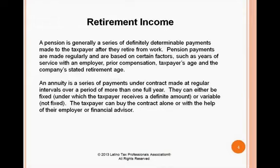An annuity is a series of payments under contract made at regular intervals over a period of more than one full year. They can either be fixed — under which the taxpayer receives a definite amount — or variable, not fixed. The taxpayer can buy the contract alone or with the help of their employer or financial advisor.